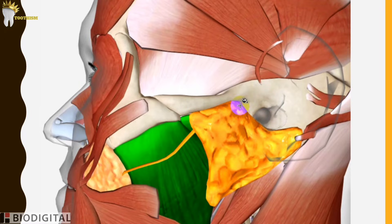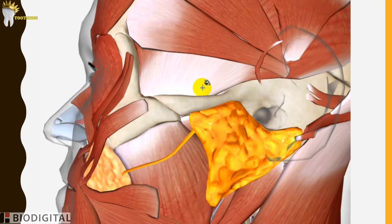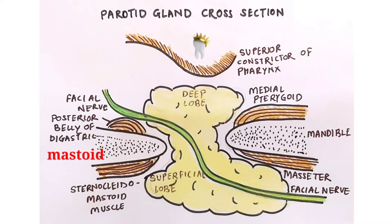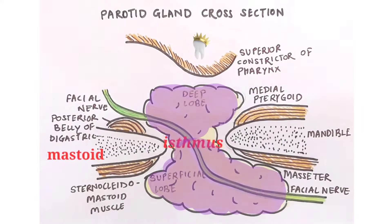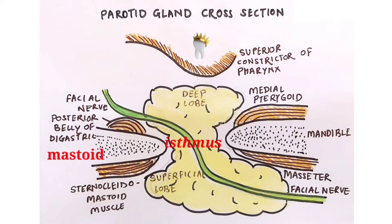The anteromedial surface is grooved by the posterior border of the mandibular ramus. In cross section, you can see that the anteromedial surface passes forwards medial to the ramus to reach the medial pterygoid muscle. In this way, it is divided into the superficial lobe and the deep lobe. The area where these two join is called the isthmus, and the branches of the facial nerve emerge on the face from the anterior margin of this anteromedial surface.